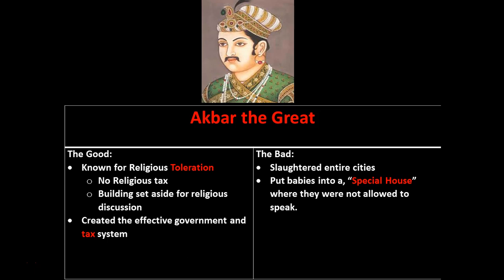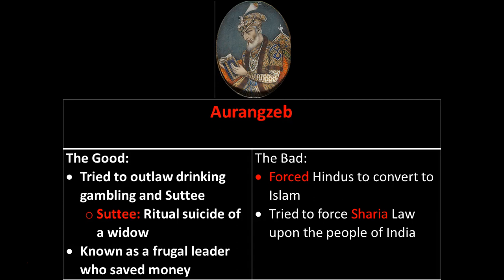Aurangzeb is another Mughal leader worth knowing. He outlawed sati — the practice where a widow was expected to throw herself on the funeral pyre — and was frugal, outlawing drinking and gambling. However, he was not tolerant: he forced conversions, imposed Sharia law, and made clear he was Muslim and expected others to follow. Not nearly as tolerant as Akbar.